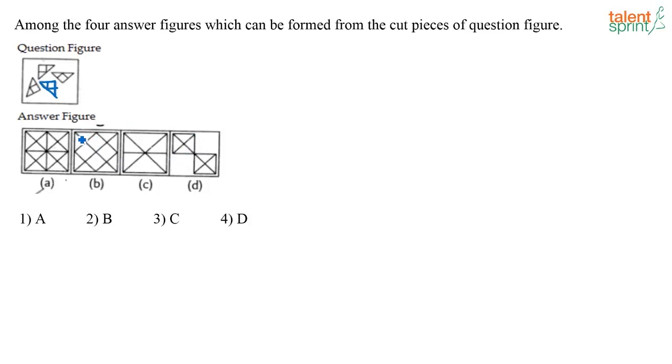See, it is actually cut out from option B. You just have to see. It is like this, and then there is a square. Similarly here, you are cutting it out like that, a square. So the correct answer here is option B.